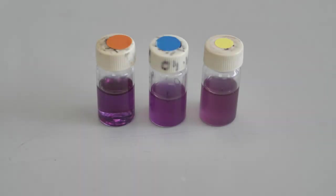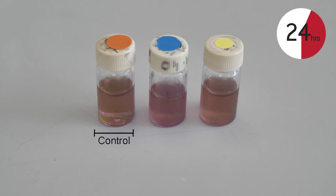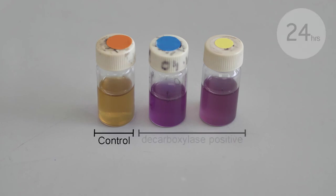In the next example take note of the following: The control is yellow meaning decarboxylation has begun. The tubes containing the amino acids lysine and ornithine are purple. Meaning this particular strain of bacteria is decarboxylase positive for lysine and ornithine.